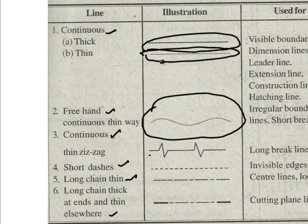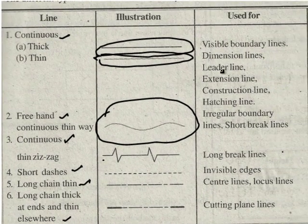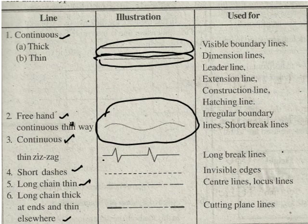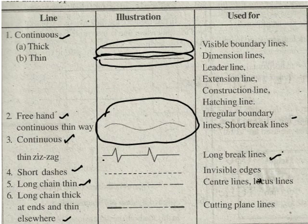The uses of these lines are given in the third column. Continuous thick lines are used for visible boundary lines, dimension lines, leader lines, extension lines, construction lines and hatching lines. Freehand continuous thin waves are used for irregular boundary lines and short break lines. Continuous thin zigzag lines are used for long break lines. Short dashes are used to illustrate invisible edges. Long chain thin lines are used for center lines, locus lines, etc. Long chain thick at the end and thin elsewhere lines are used for cutting plane lines.